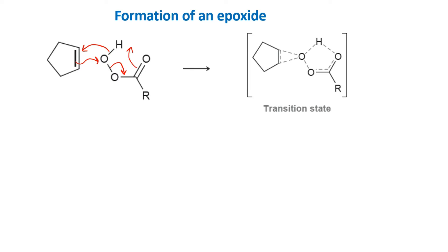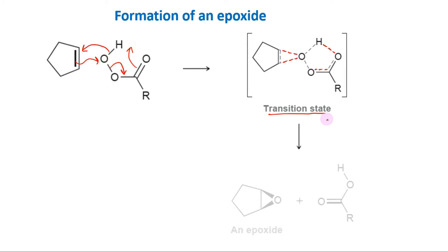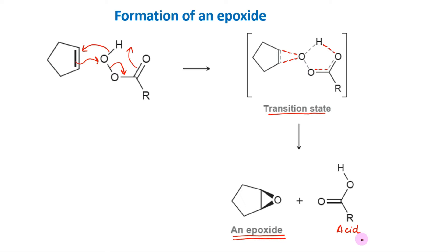The red dotted lines in the transition state depict the bonds that are being formed, whereas the black dotted lines depict the bonds that are being broken. Thus, starting with the alkene and the peroxyacid, a one-step reaction gives the epoxide and the acid directly, without any intermediates.